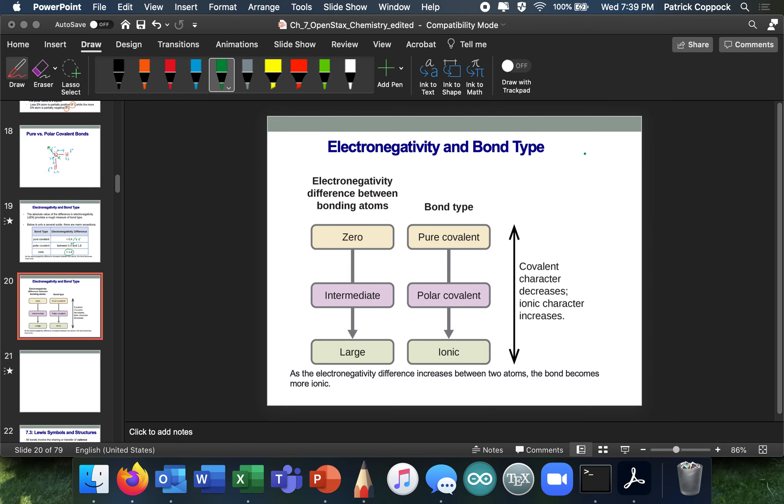Final graphic for the day. Electronegativity differences between atoms. If it's 0, it's purely covalent. We just call it covalent. If it's intermediate, we call it polar covalent. If it's large, we call it ionic. Ionic character increases as we go that way, of course. All right. That was a lot of work for the day. Good work, folks. Go practice these concepts with homework problems. Good luck.